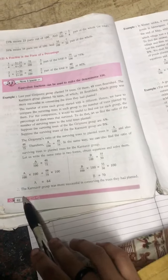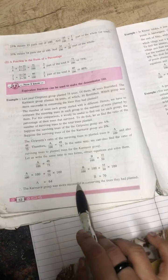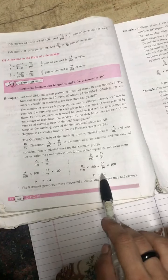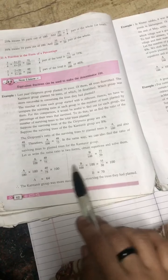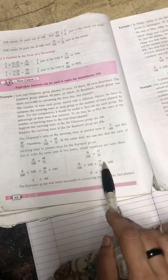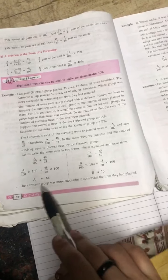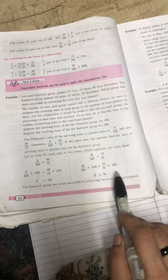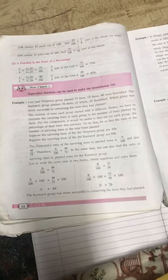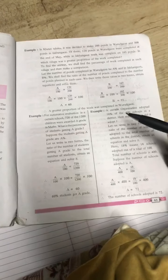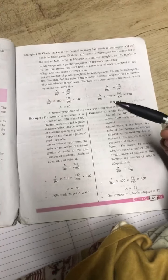Therefore Karamvir group was more successful in conserving the trees they had planted because Karamvir's survived tree was 70 and Giri Preemi is 64. So whose is more, more, it is Karamvir. So that is why Karamvir group has successfully conserved so many, so much percentage of trees. So this group is more, understood students?